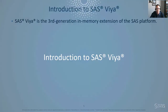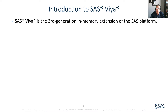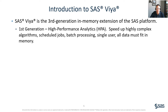SAS Viya is the third generation in-memory extension of the SAS platform. Our first generation was high performance analytics. This had the capability to speed up highly complex algorithms, scheduled jobs, and offered batch processing. However, it was limited to single user access and required that all data must fit into memory.